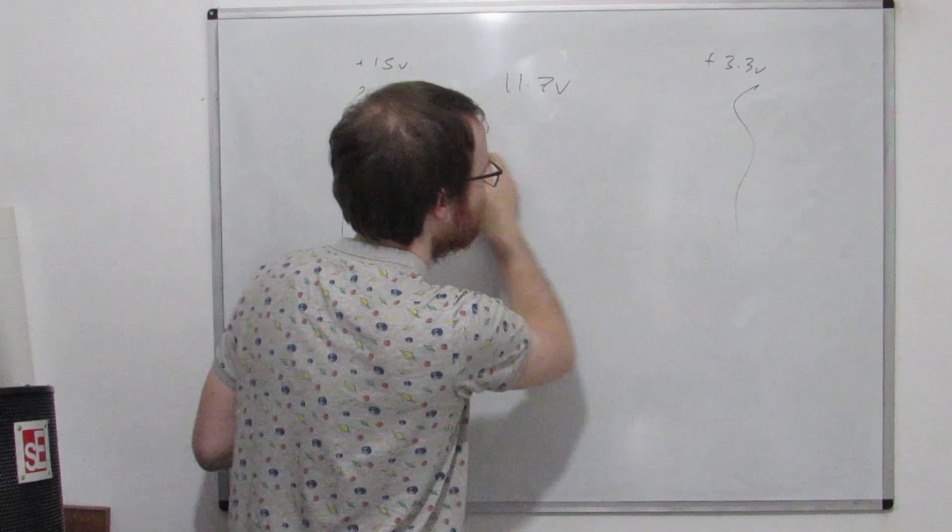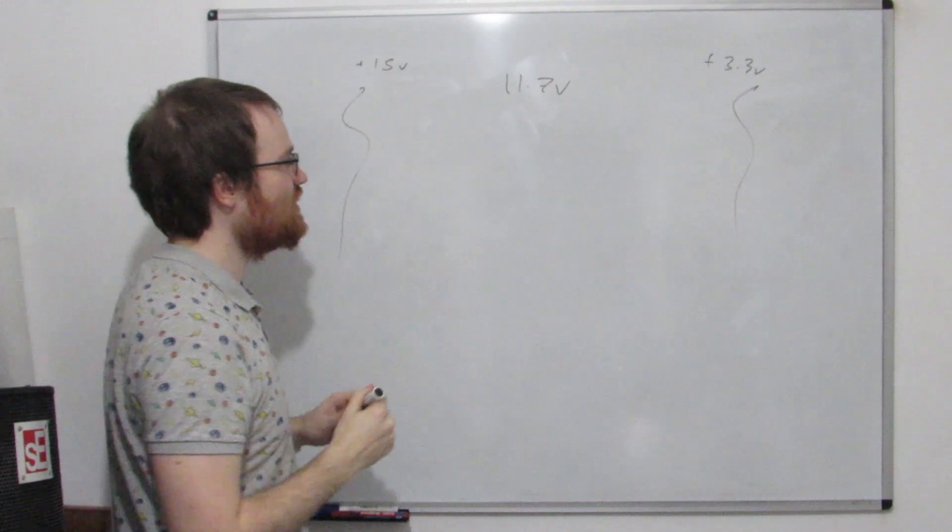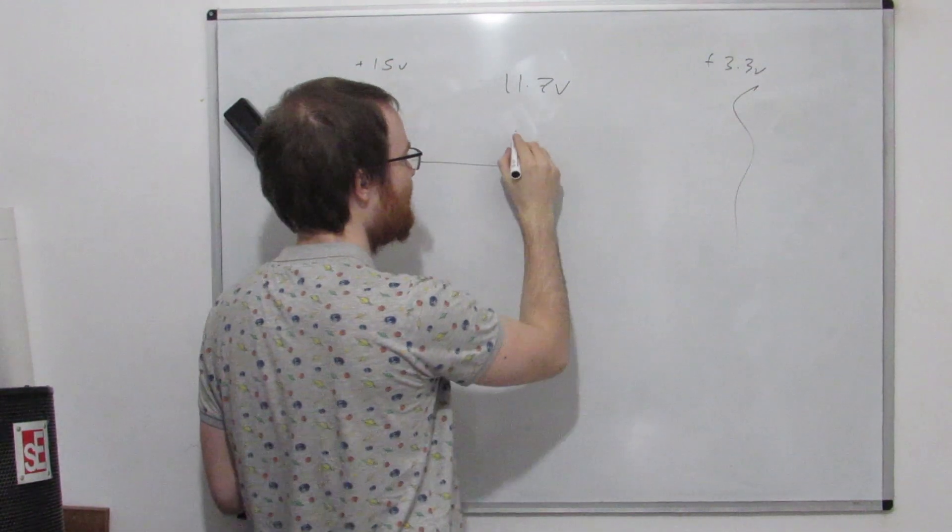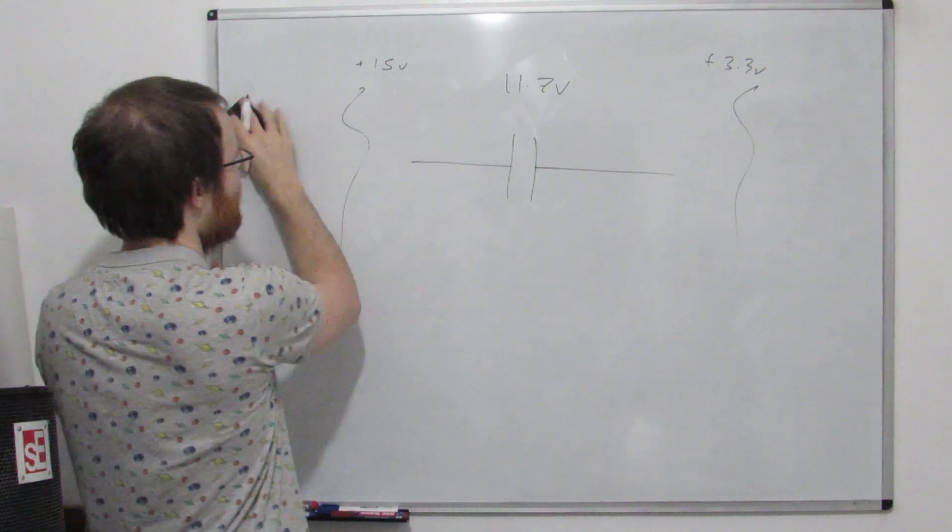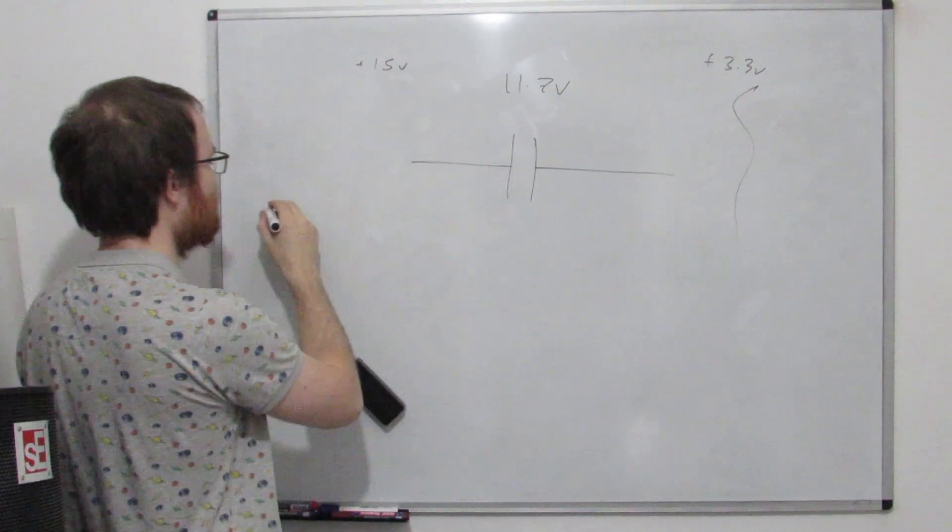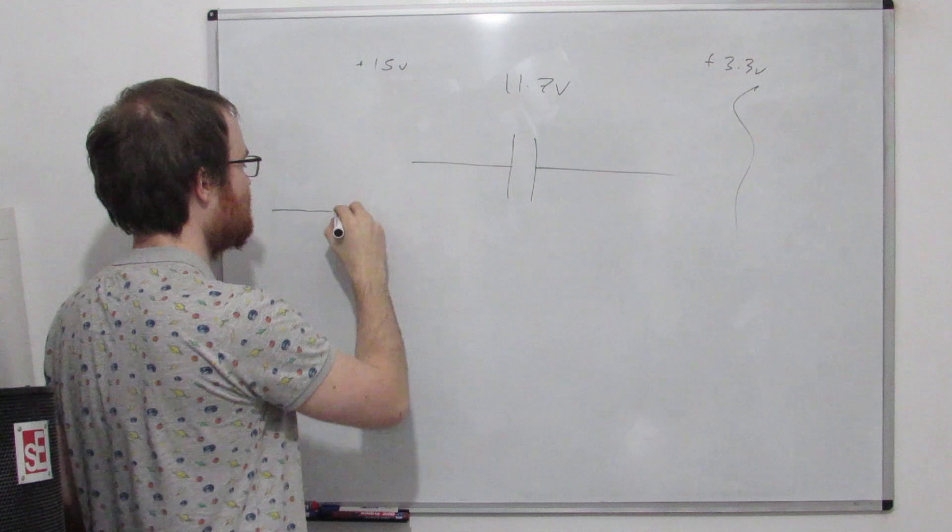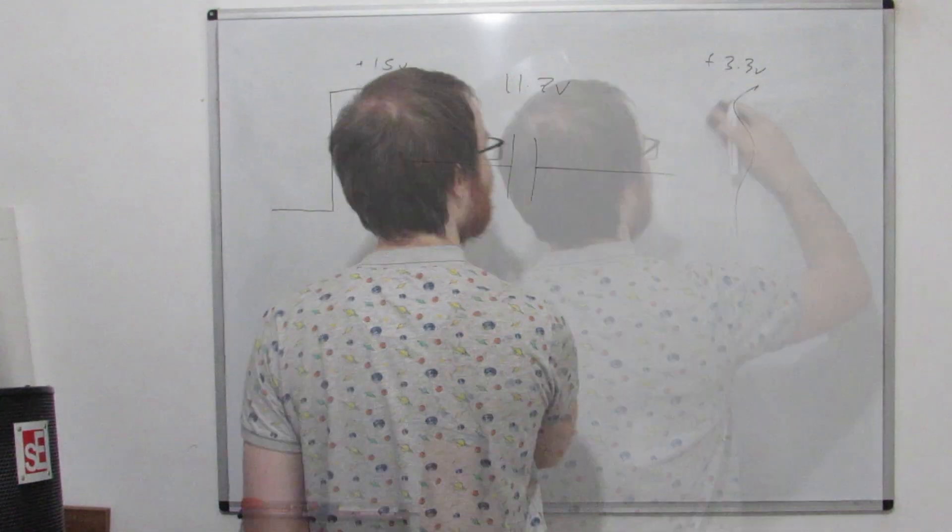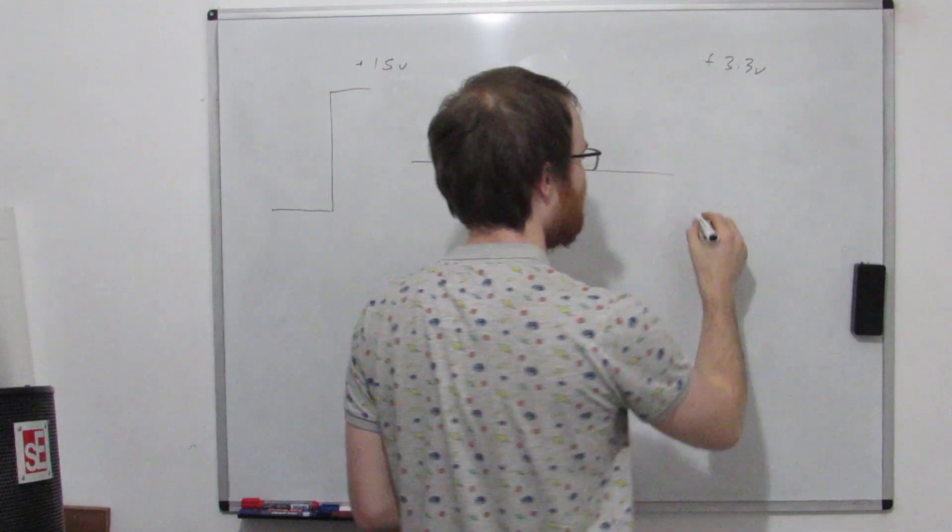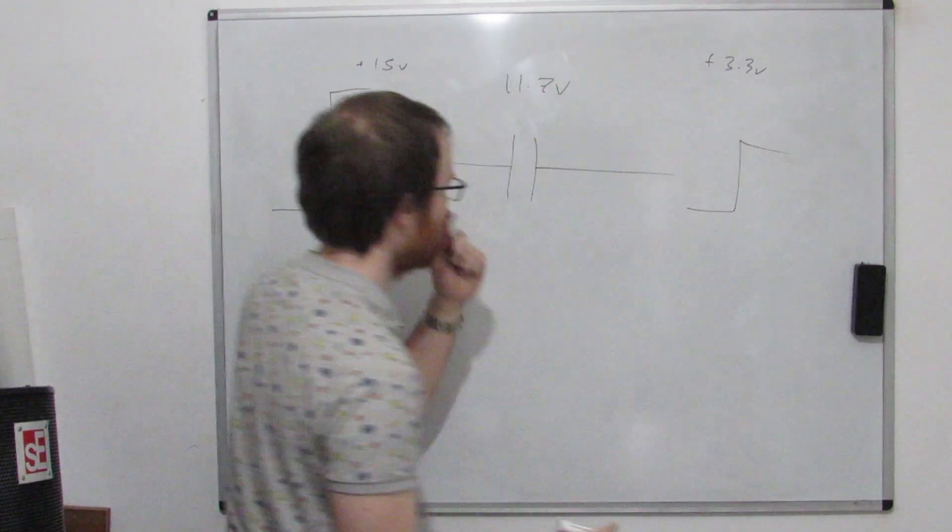So we're going to have an 11.7 volt drop across this resistor, which is going to give us some current here. There's loads of reasons why we might not want this to happen. So what can we do? Well, what we can do is instead of a resistor here, we can stick a lovely capacitor. Let's say we just turn this on. What's the voltage at this point going to look like? Well, it's going to start at zero, and then when we turn the system on, that's going to jump up to 15 volts. And over here, this starts at zero. When we turn the system on, that's going to jump up to 3.3 volts.